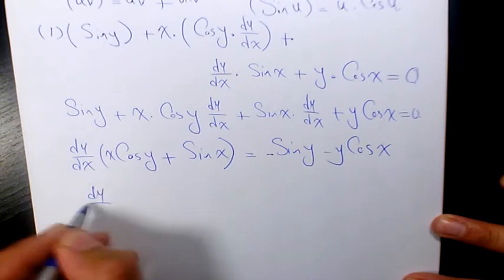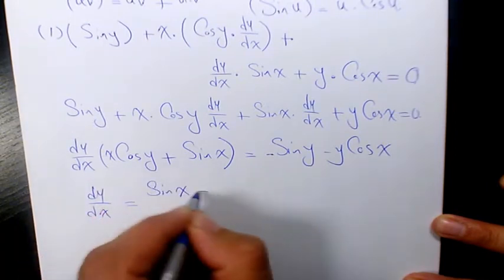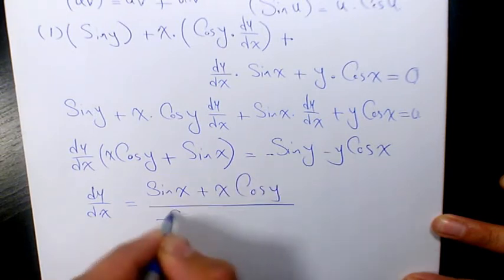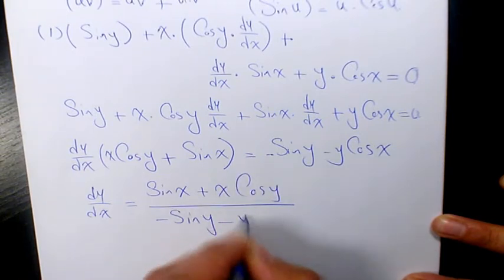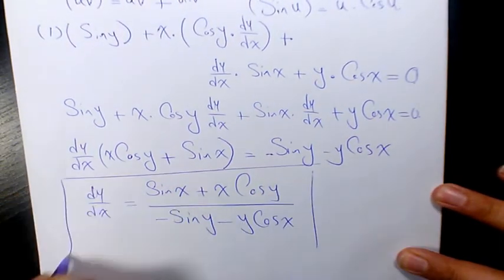So dy over dx will be sine x plus x times cosine y over negative sine y minus y cosine x. So that's the derivative of this expression.